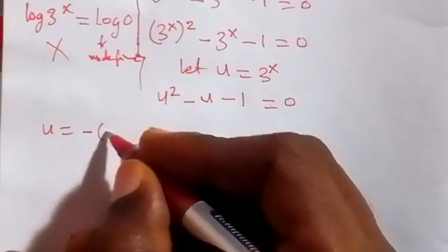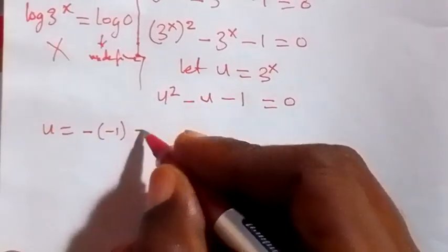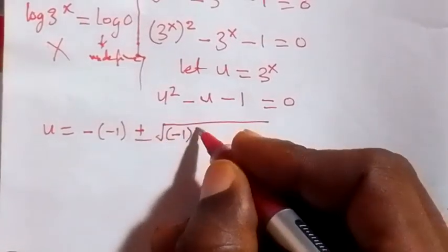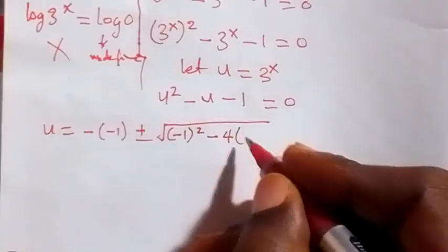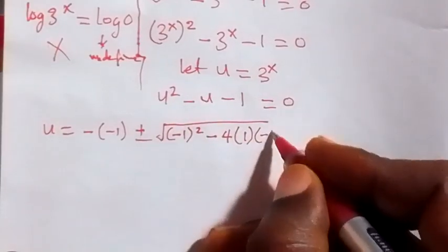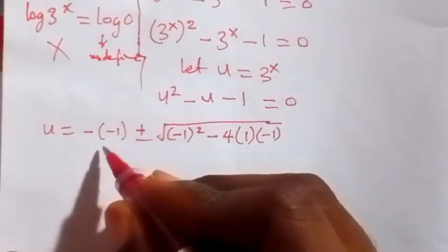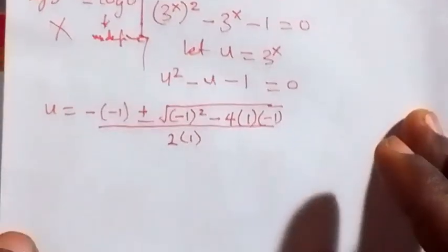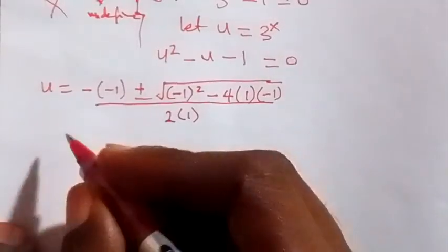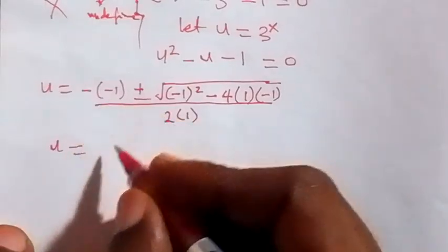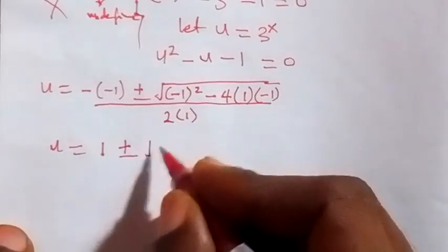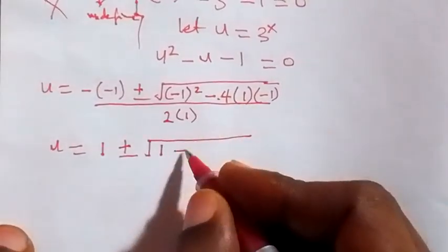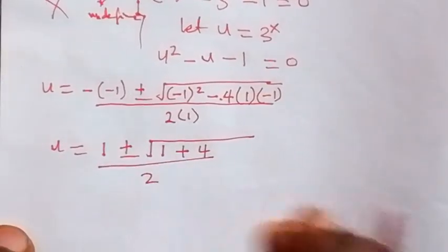Then when we solve using the quadratic formula, u equals to: minus b — where b is minus 1 — plus or minus square root of b squared minus 4ac, where a is 1 and c is minus 1, all over 2 times a which is 2 times 1. From here we solve this and get u equals to 1 plus or minus square root of (1 plus 4) over 2.